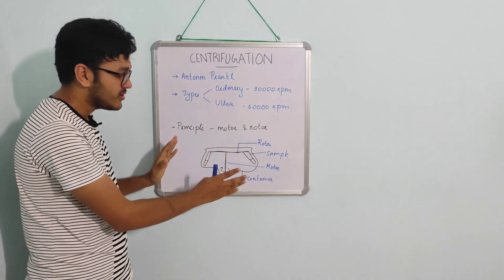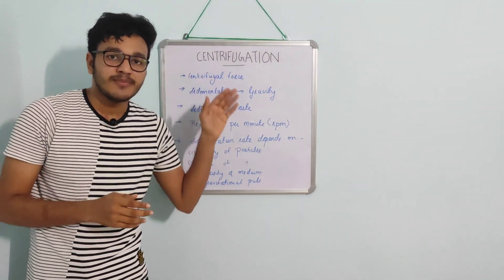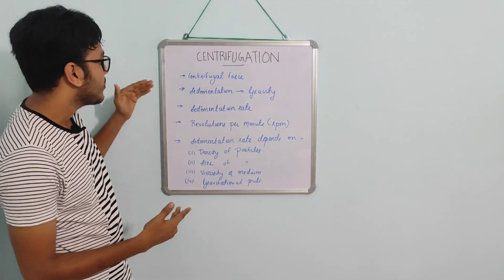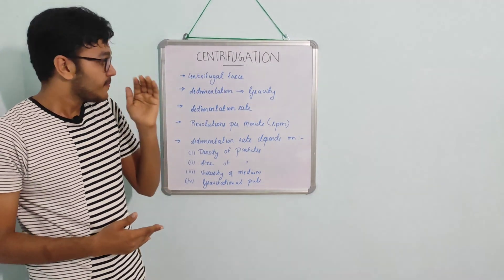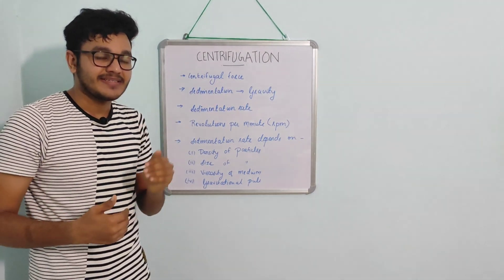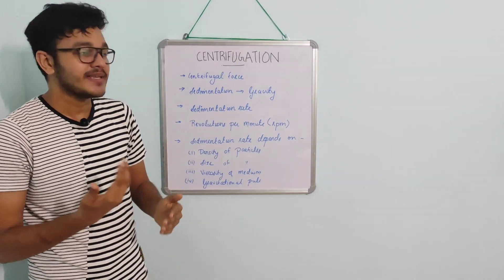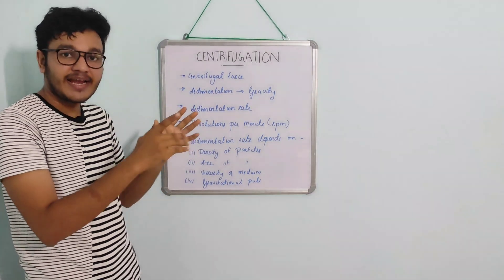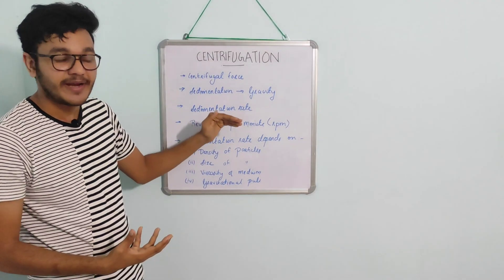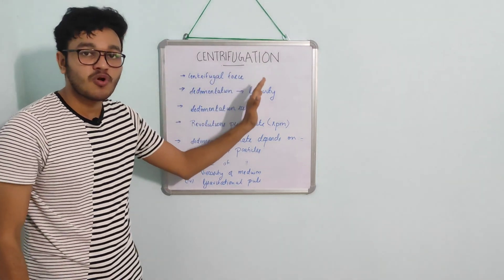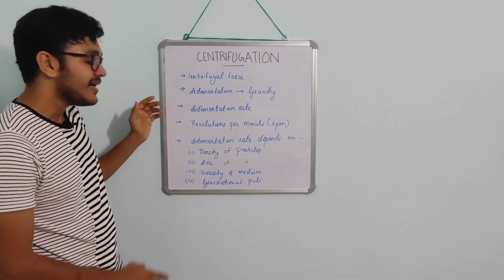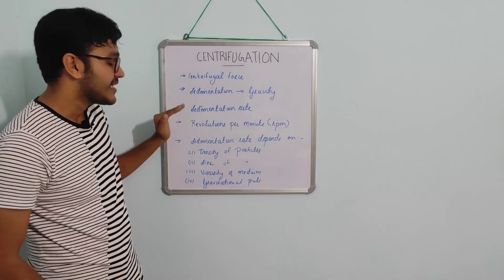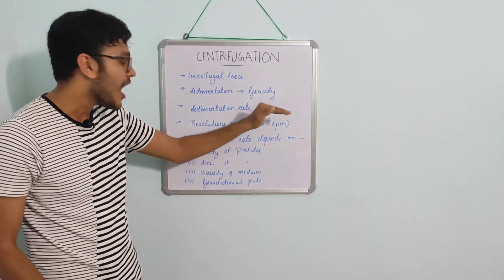Coming to the terms related to centrifugation: the spinning of the centrifuge causes a force on the particles, which is known as centrifugal force. The centrifugal force causes the movement of particles; that is, the particles suspended in the solution move down due to gravitational pull. That movement of particles is known as sedimentation, and the rate at which the particles move is known as the sedimentation rate. The speed of rotation is termed as revolution per minute, or RPM.